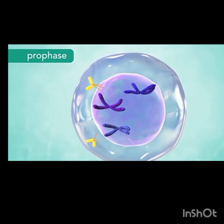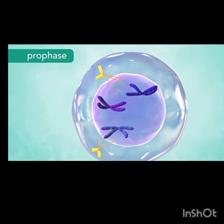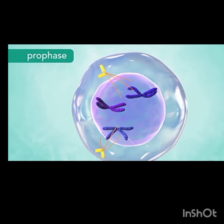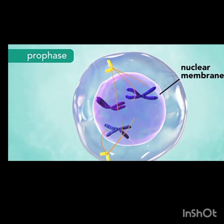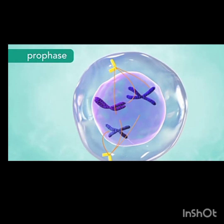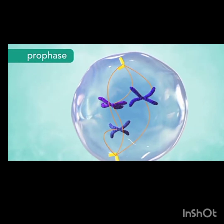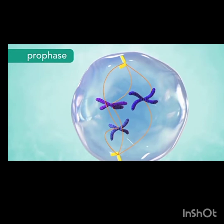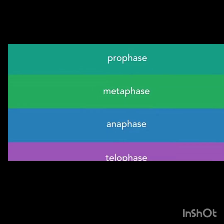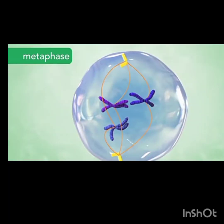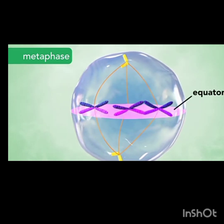The centrosomes form spindle fibers — the hair-like structures. In prophase the centrioles move toward either pole of the cell and attach to the chromosomes. The nuclear membrane disappears during prophase, but the chromosomes are held in place by the spindle fibers so they cannot scatter.